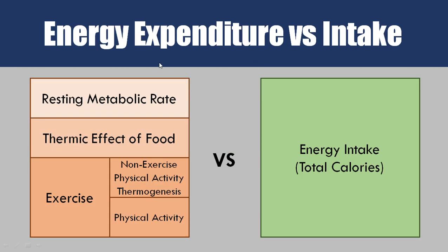The energy expenditure side of this equation has sub-components. Our energy expenditure is made up of many different components: our resting metabolic rate, which is essentially how much energy we burn just to stay alive, and the thermic effect of food, which is the energy used for digestion when we eat — though this is quite a minimal amount.